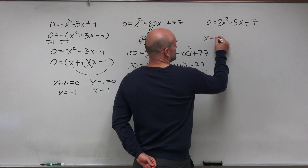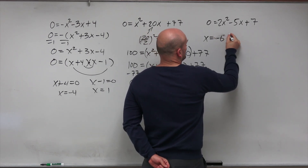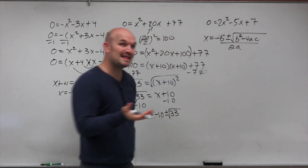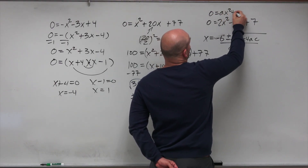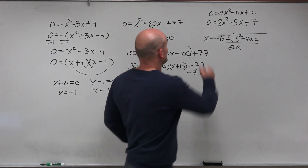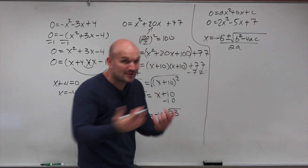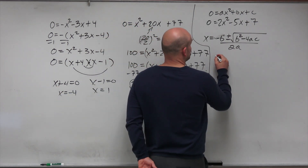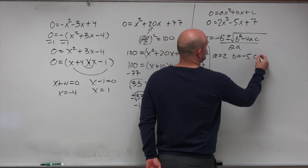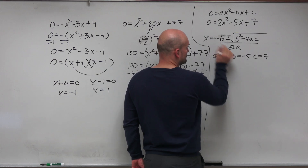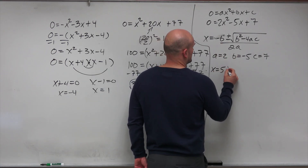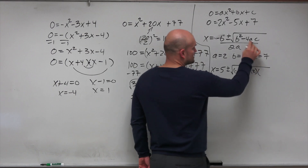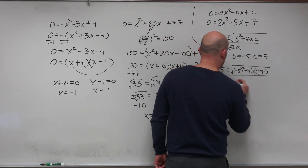The nice thing about the quadratic formula is that once you identify a, b, and c, it's just a plug and chug. In this case, a equals 2, b equals negative 5, and c equals 7. So we have the opposite of b, which is positive 5, plus or minus the square root of negative 5 squared minus 4 times 2 times 7, all divided by 2 times a, which is 4.